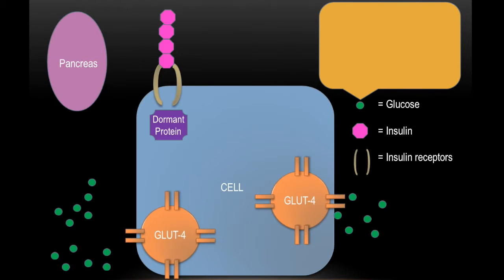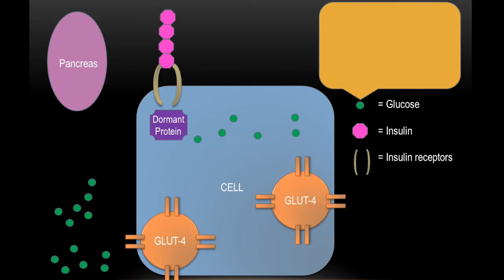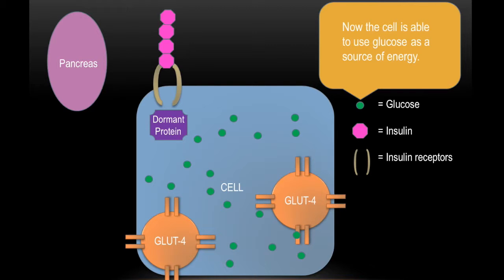And once it goes to the cell membrane the glucose is able to come into the cell. And now the glucose can be used for energy. Let's go to the next slide.